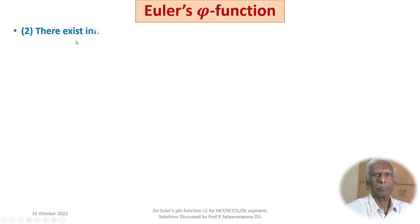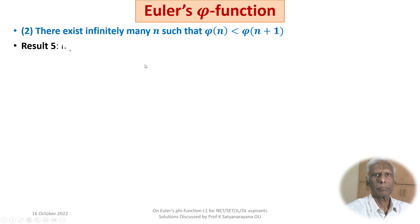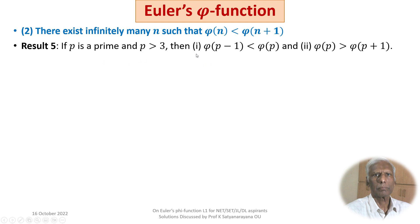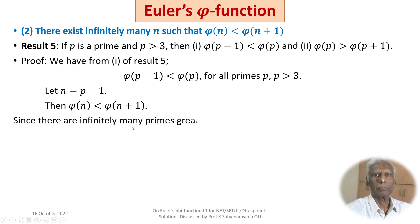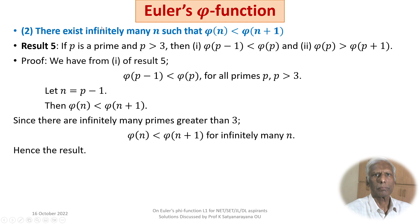We are now ready to establish the main results. For Result 2 (there exist infinitely many n such that phi(n) < phi(n+1)): from the first part of Result 5, phi(p − 1) < phi(p) for all primes p > 3. Setting n = p − 1, we get phi(n) < phi(n + 1). Since there are infinitely many primes greater than 3, phi(n) < phi(n + 1) for infinitely many n.